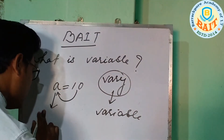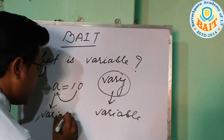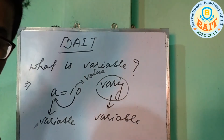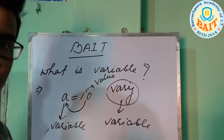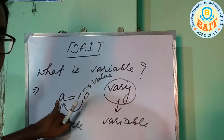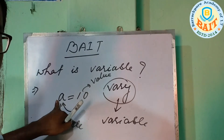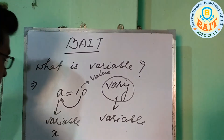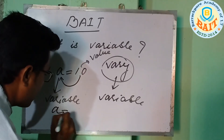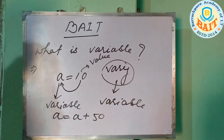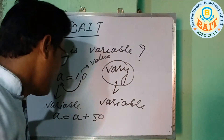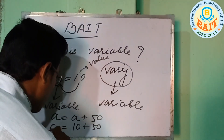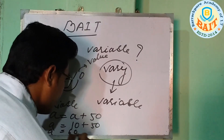So a is a variable and 10 is a value. Now, how can this variable vary and store different numbers? Suppose we write a equals a plus 50. The original value of a is 10, so 10 plus 50 means a now becomes 60.